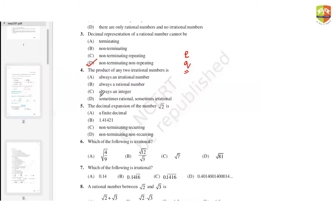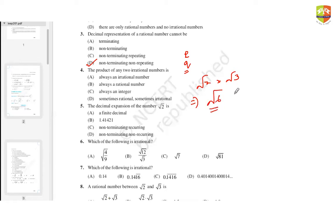The second answer: the product of any two irrational numbers is sometimes rational and sometimes irrational. For example, root two into root three gives root six, which is irrational. But root three into root three gives three, which is rational. So the answer is 'sometimes rational, sometimes irrational.'